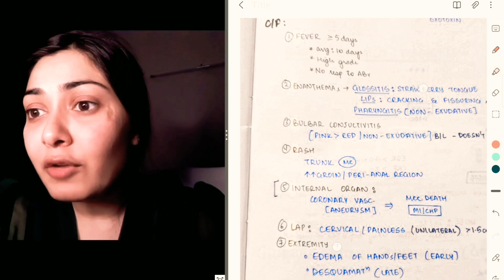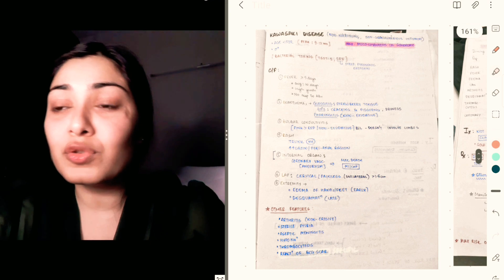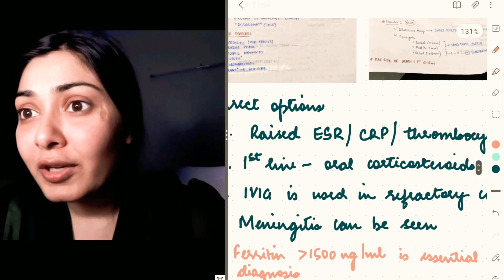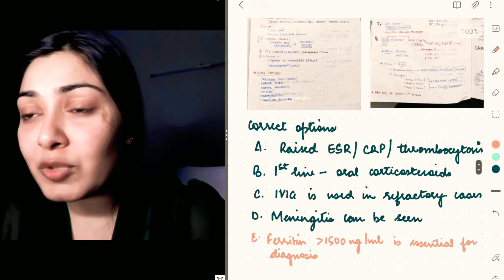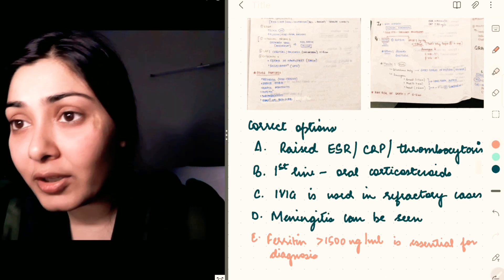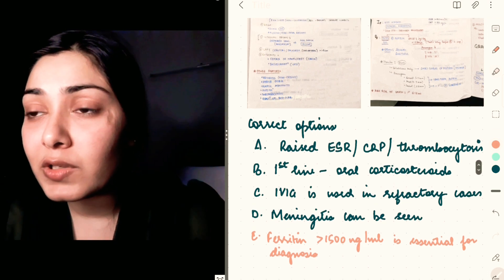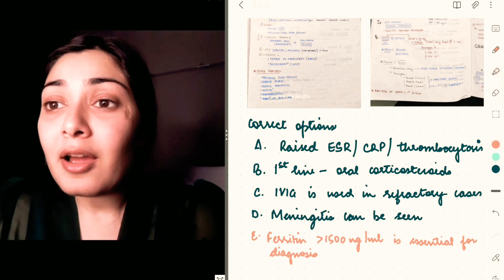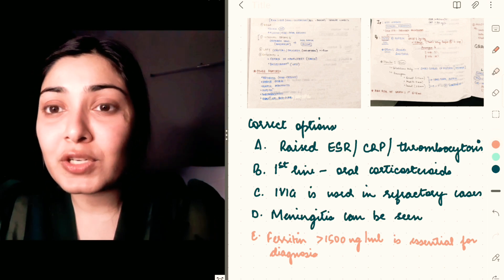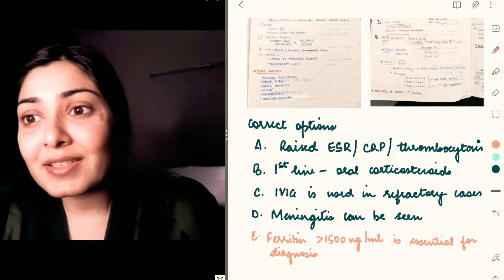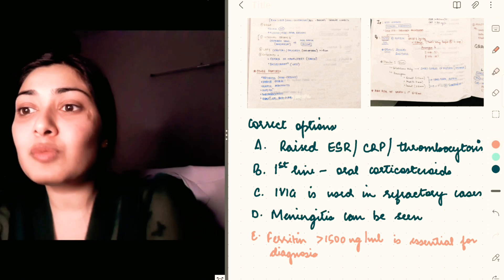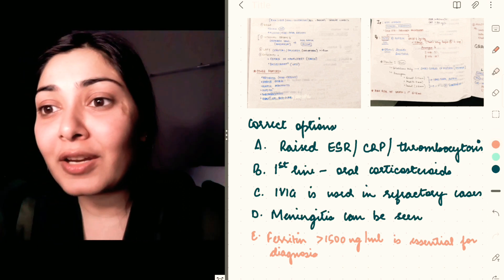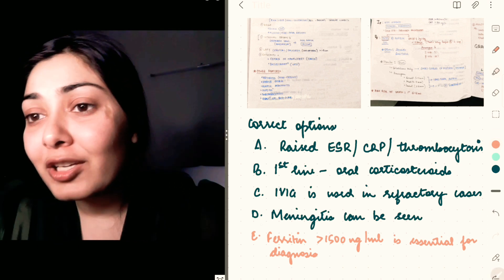I think that was a typical scenario that was given, and a few statements were given. You had to choose the wrong one or the correct one. The first option was raised ESR, CRP, and thrombocytosis. The second was first-line is oral corticosteroids. Third was IV IG is used in refractory cases and aseptic meningitis is seen. There was another option that ferritin more than 1500 is essential for diagnosis. You have seen the diagnostic criteria—ferritin is definitely not mentioned in the criteria, so it's wrong.